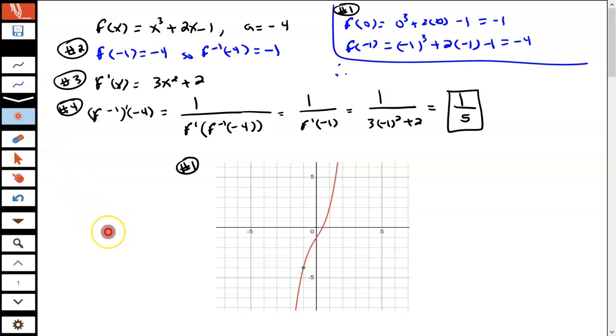And then to find the derivative of the inverse at negative 4, we would write 1 over f prime of the inverse of negative 4. And we know that the inverse at negative 4 is equal to negative 1. So we can replace this f inverse of negative 4 with negative 1. And we know that the derivative of the function is 3x squared plus 2. So now I can replace that derivative with 3x squared plus 2 and plug in the negative 1 for x and then simplify. And when I simplify that, I end up with 1 over 5.